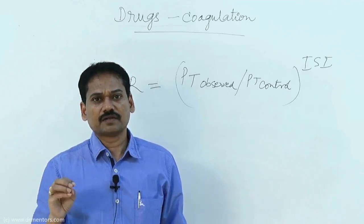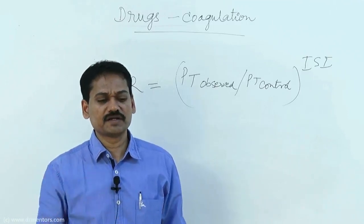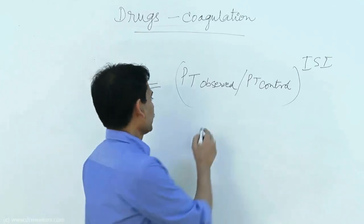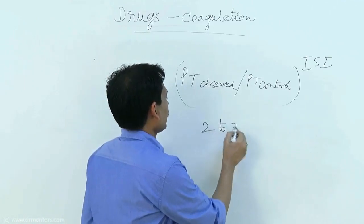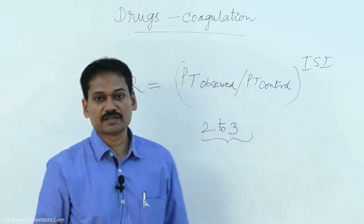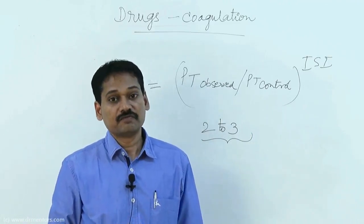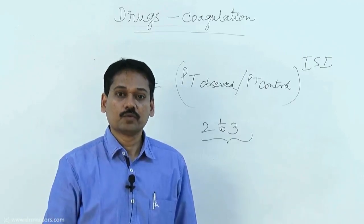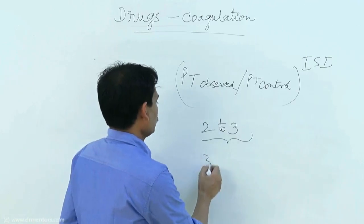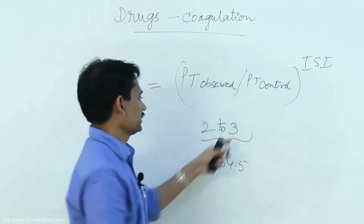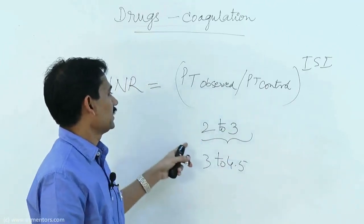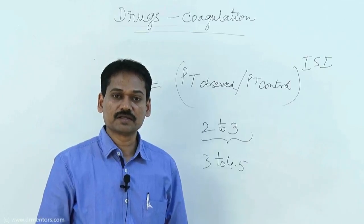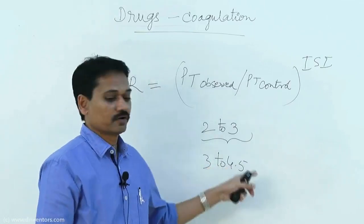In most patients, the target INR is 2 to 3. In patients suffering from pulmonary embolism, deep vein thrombosis, or severe thrombosis, the INR can be relaxed to a higher level of 3 to 4.5.